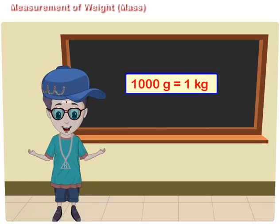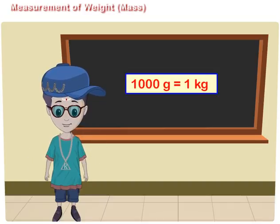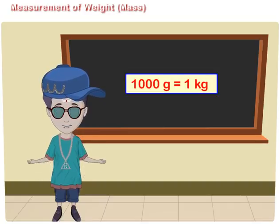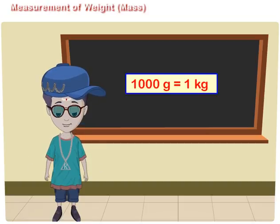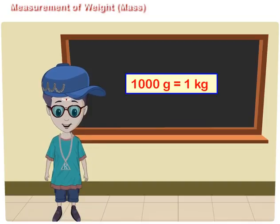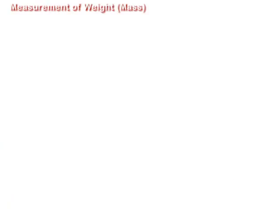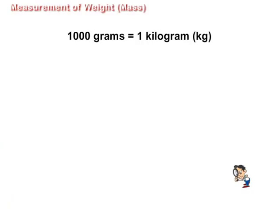Hello friends, we have learnt that the standard unit of weight or mass is a kilogram, which is further divided into 1000 equal parts. Each part is called a gram. Thus, 1000 grams are equal to 1 kilogram.